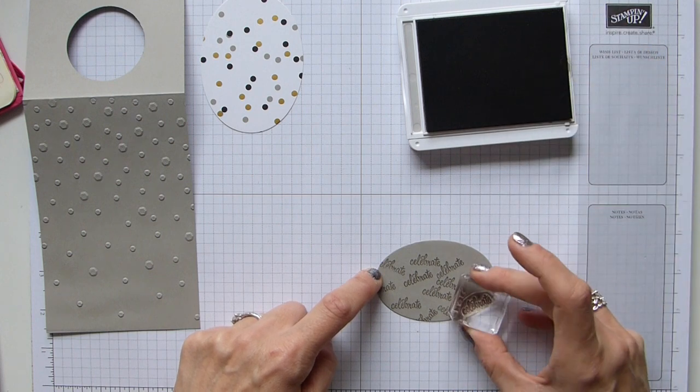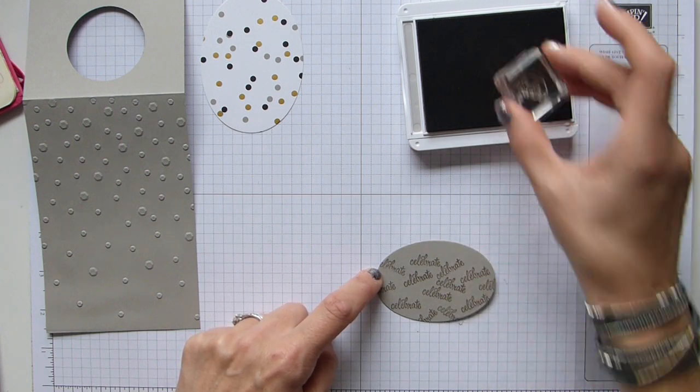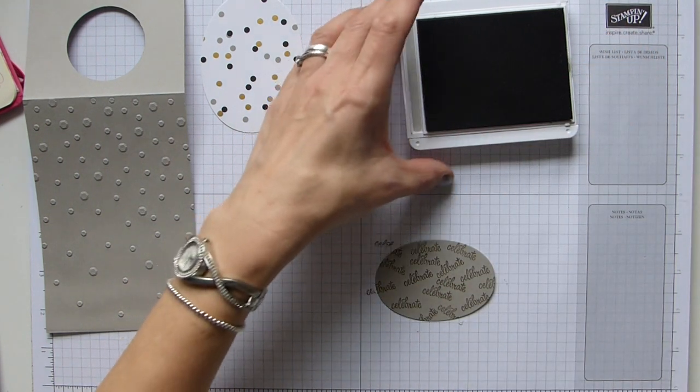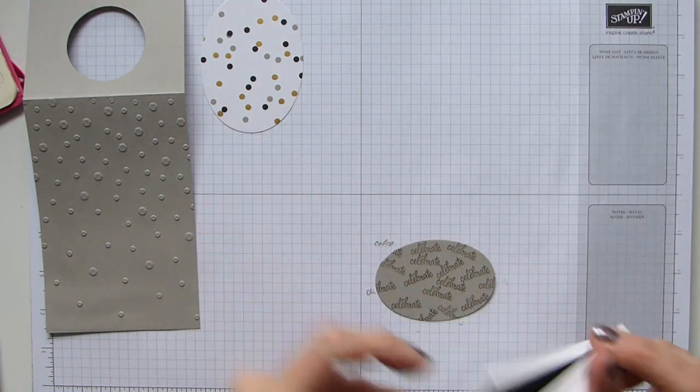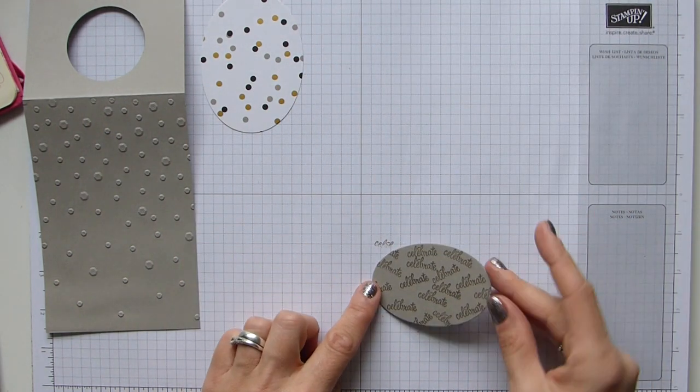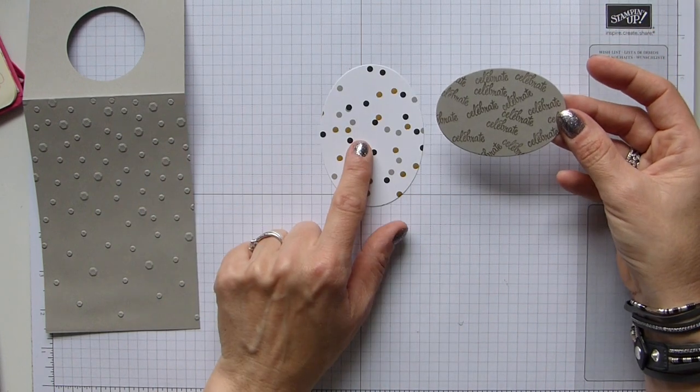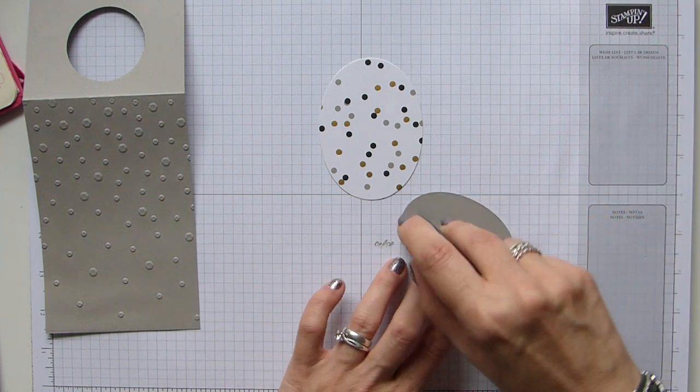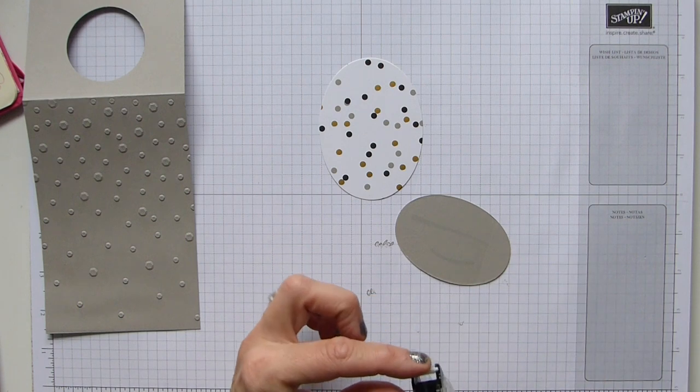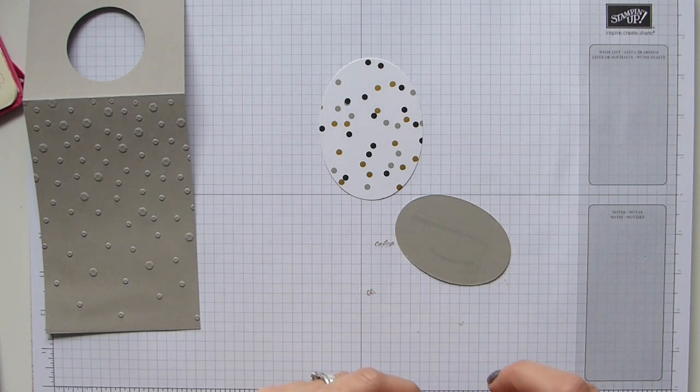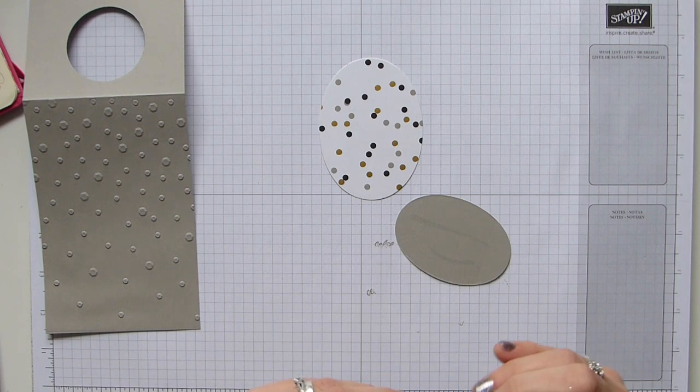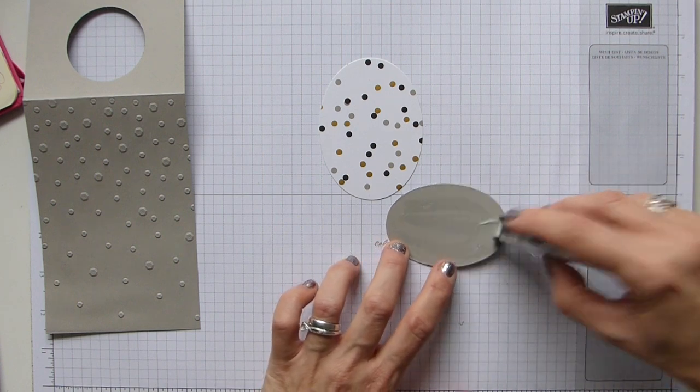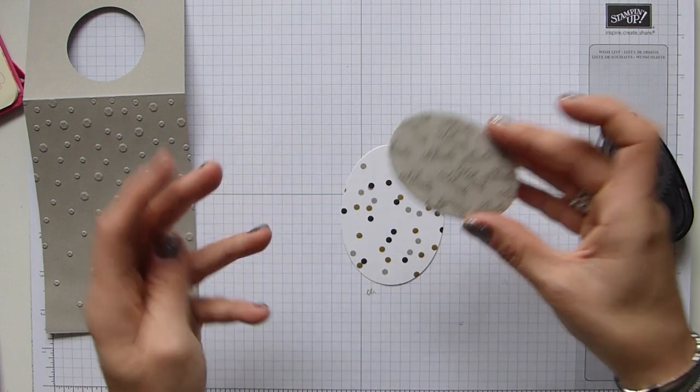Just stamp stuff anywhere and everywhere. Okay, so just a little bit of random stamping there. That bit's done, and then this gets stuck onto here, so I'm just going to grab my snail.